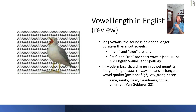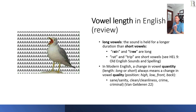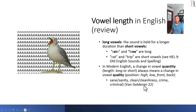The Great Vowel Shift affected long vowels — a long vowel is one where the sound is held for a longer duration than short vowels. Rain and tree are long; wrap and trip are short vowels. In modern English, a change in vowel quantity (long or short) always means a change in vowel quality — that is, position: high, low, front, and back. So you never have a short 'rain' — that 'a' sound is very rarely to never short in modern English. When we have one word form derived from another, as 'sanity' from 'sane,' there's a change in vowel quality as well as length: sane/sanity, clean/cleanliness, crime/criminal.